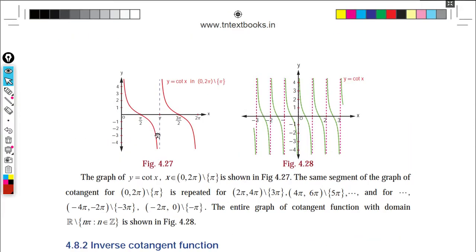Looking at the graph of the cotangent function: it is an odd function. From 0 to π/2 the graph decreases. Cot approaches plus infinity near 0 and minus infinity near π. The period is π.